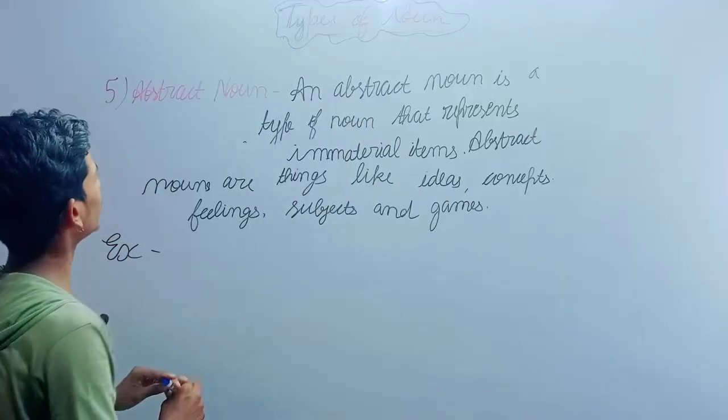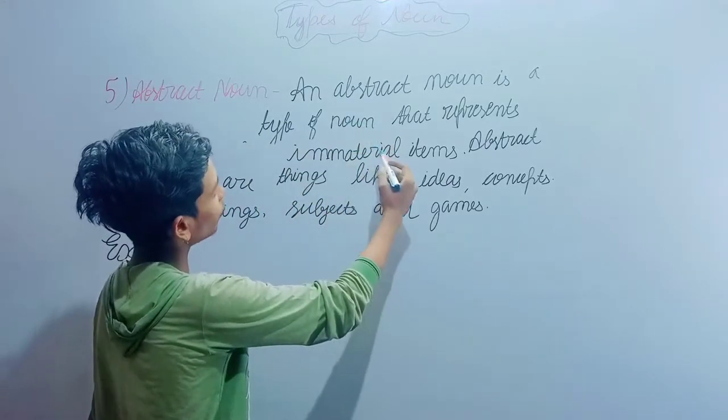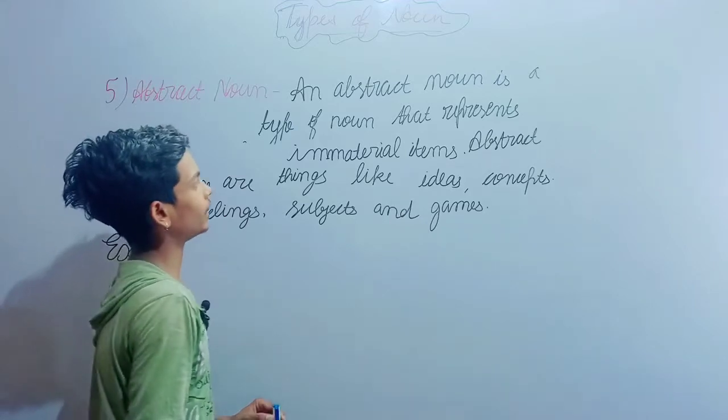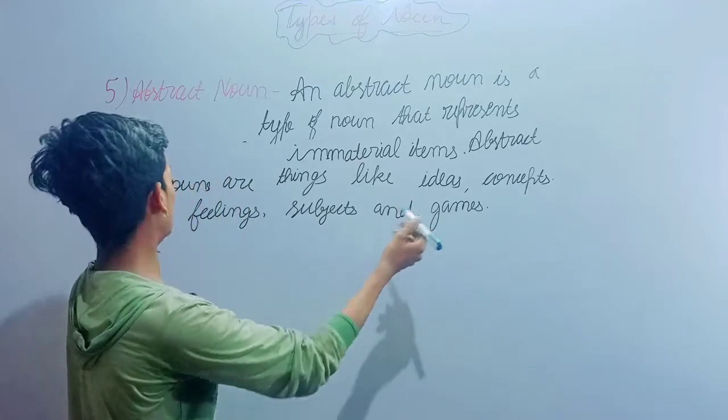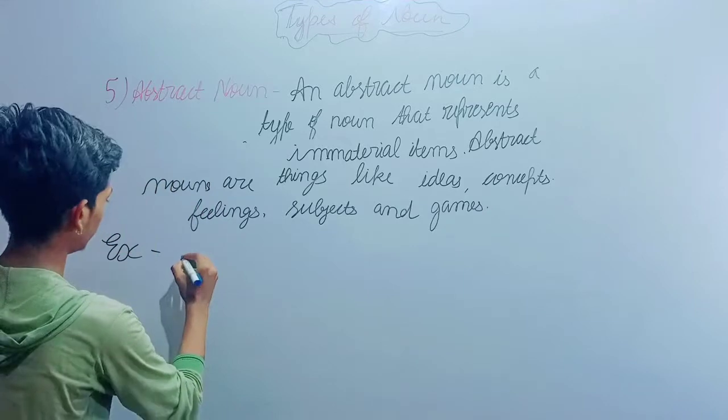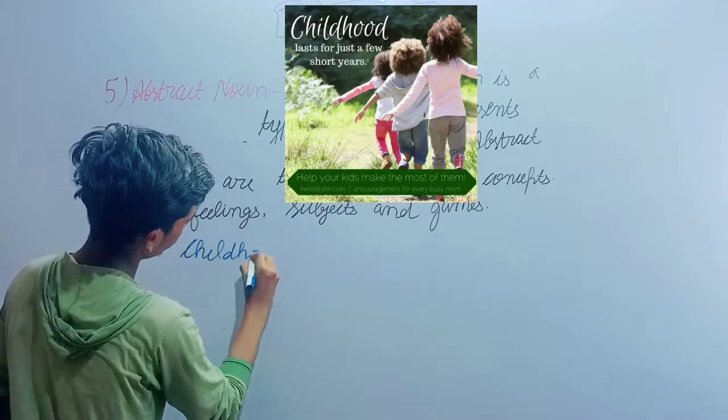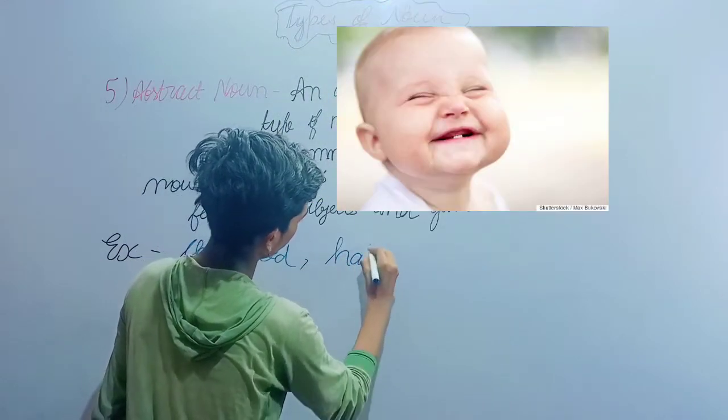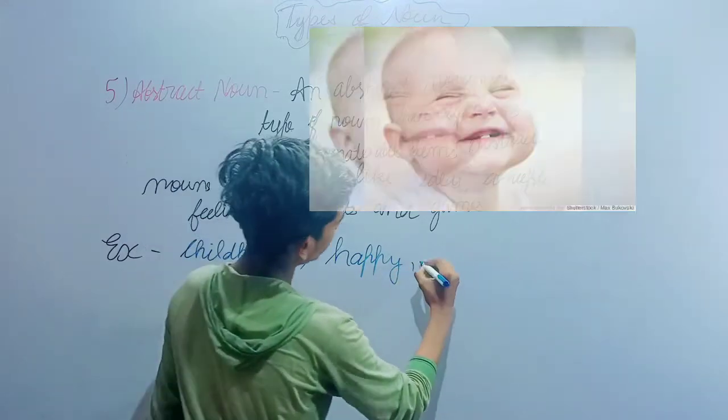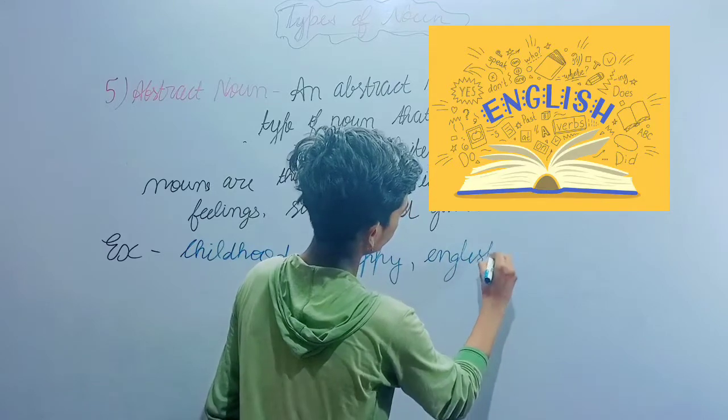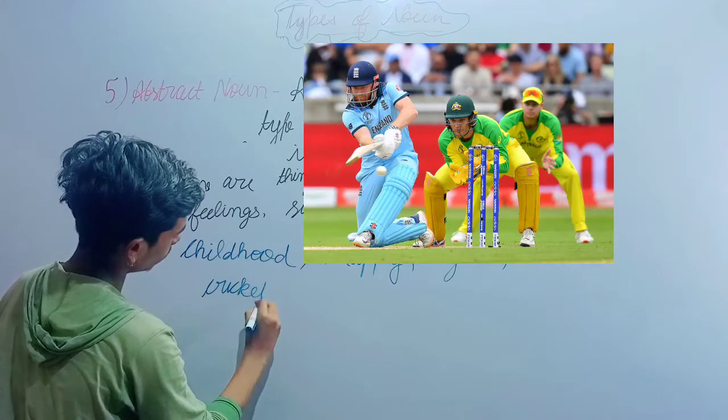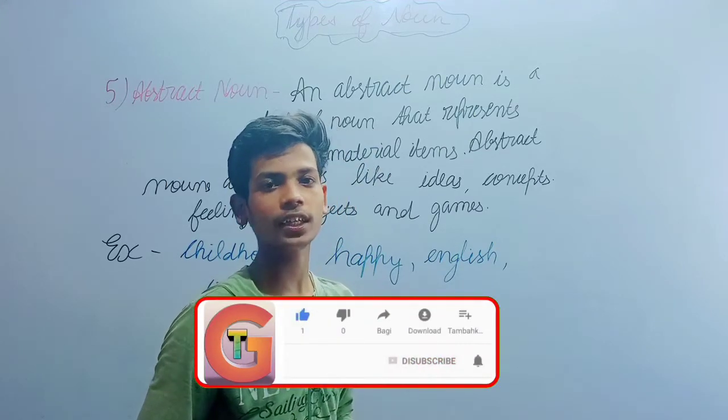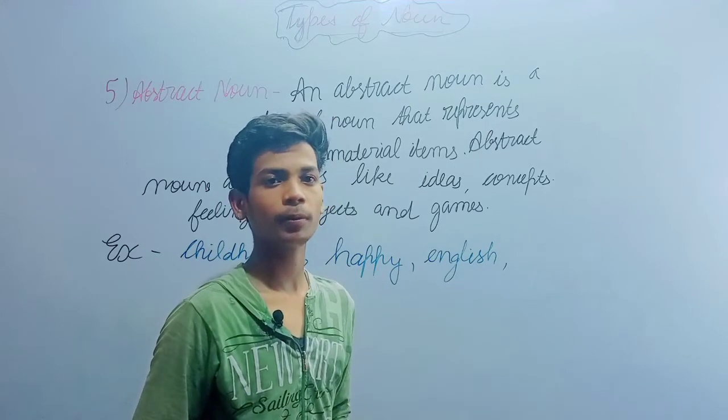The last type is abstract noun. Abstract nouns represent immaterial items - things like ideas, concepts, feelings, subjects, or qualities. For example, childhood is a feeling. Another example: 'I am really happy' - happy is a feeling. Subjects like English and games are also examples.